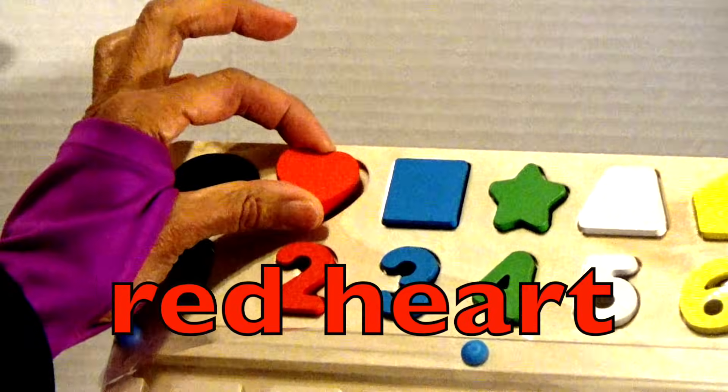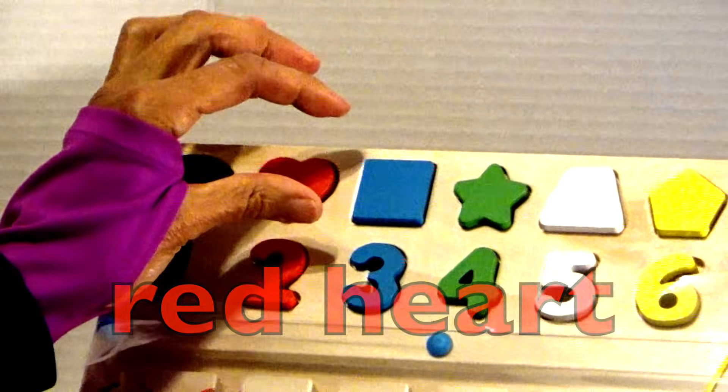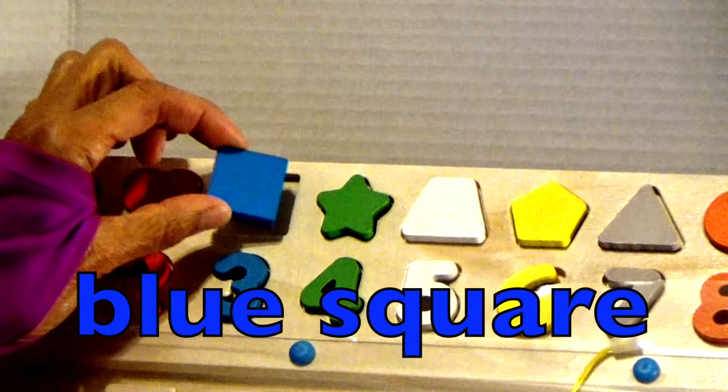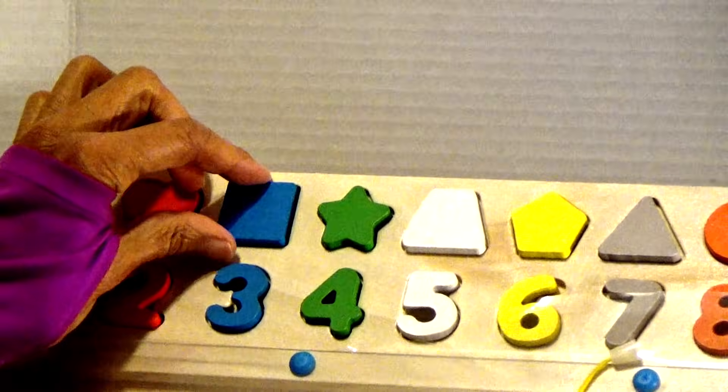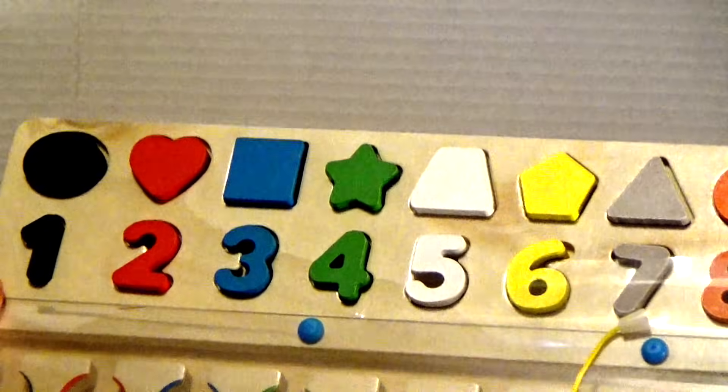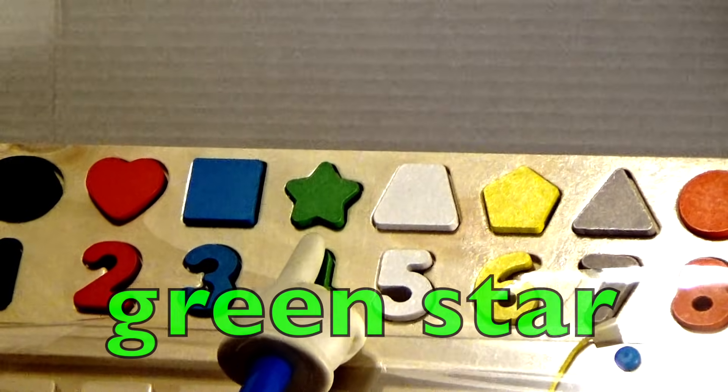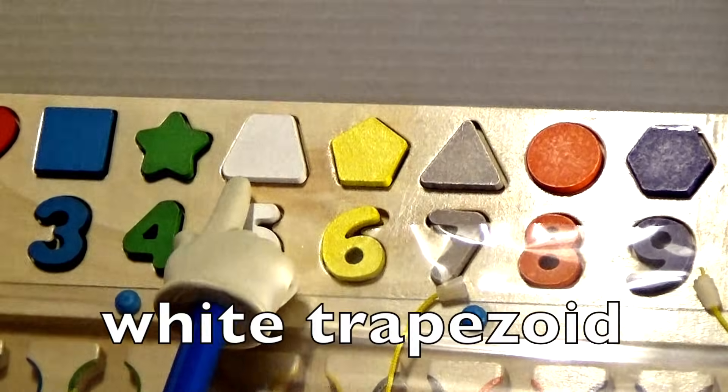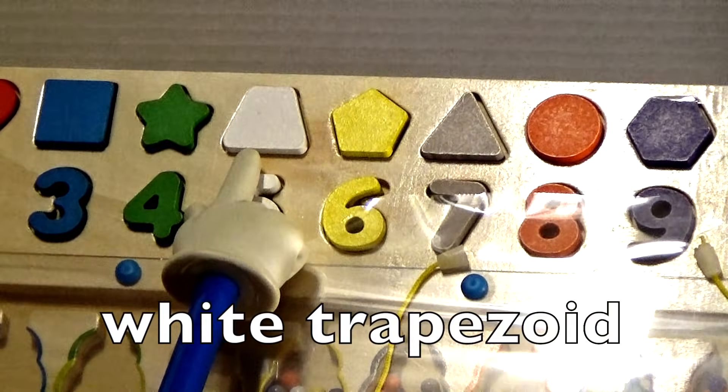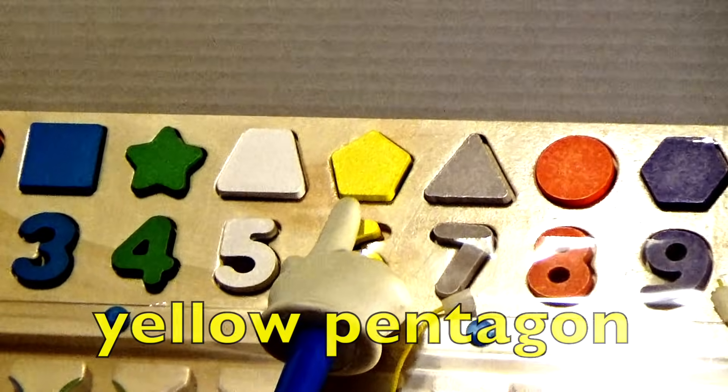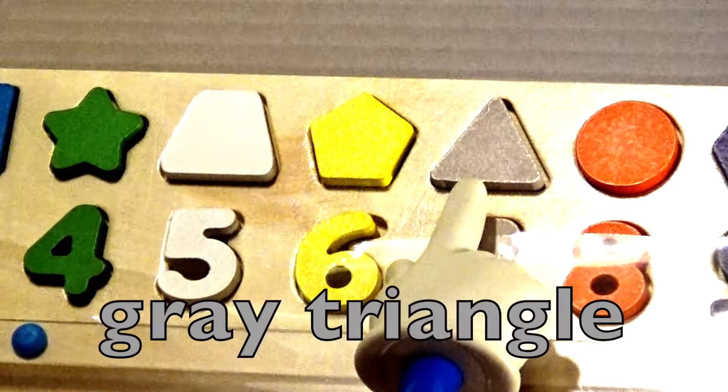Pull this out. This is a red heart. Here we have a blue square. I'm not going to pull out the other ones. I'm just going to point. Here is a green star. This is a white trapezoid. Here is a yellow pentagon. Then we have a gray triangle.